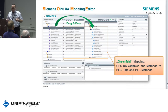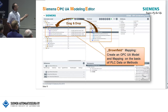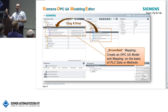The second brownfield option is the more usual way: you have your already set-up machine, and you drag and drop not the whole object but just a single variable. You then get the mapping here, and you can also verify the mapping — checking whether it is valid, whether the PLC data exist and have the correct data type.